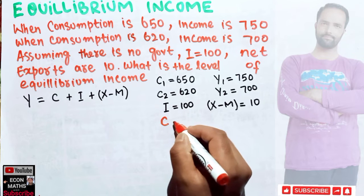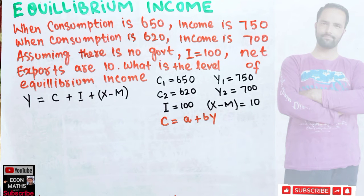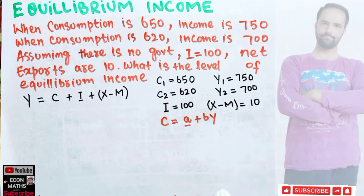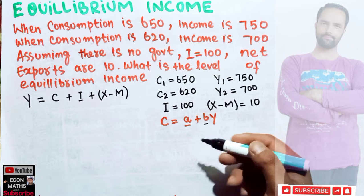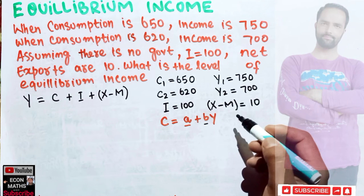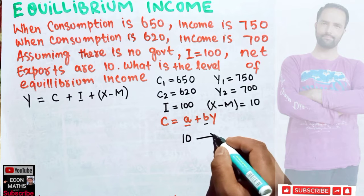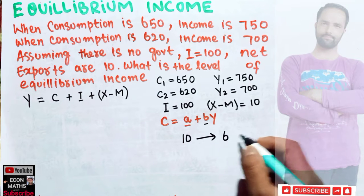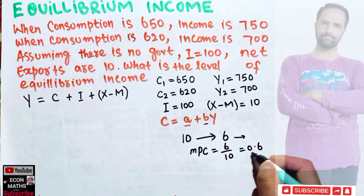The consumption function is written as C = a + bY. Here, 'a' denotes autonomous consumption — the level of consumption that does not depend on income. 'b' is the marginal propensity to consume (MPC), which measures the proportion of extra income spent on consumption. For example, if an individual gains an extra 10 dollars and consumes 6 dollars of it, then MPC = 6/10 = 0.6.